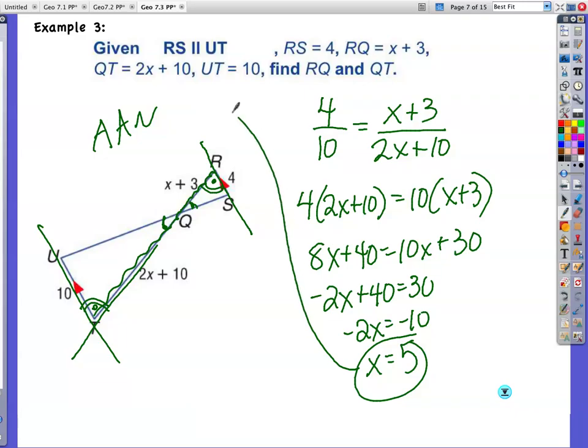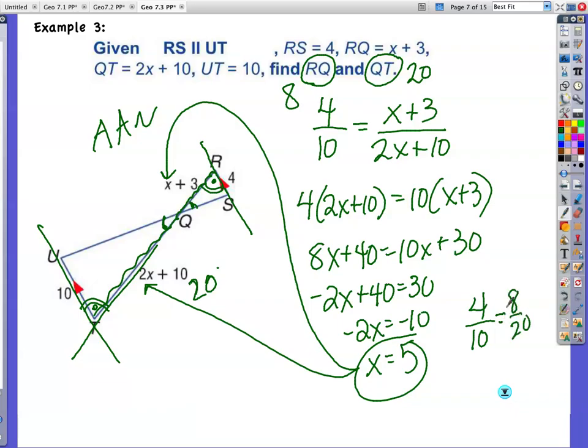Now that I have X is equal to five, I can put it in. So the distance from R to Q is eight units. And I put five in here. Five times two is ten. Ten plus ten is twenty. So I can say Q to T, the distance from Q to T is twenty units. If I really wanted to double check, is four to ten the same as eight to twenty, cross multiply, eighty and eighty. Or some of you can look and say, four tenths is the same as eight twentieths. So you can check your work on that.